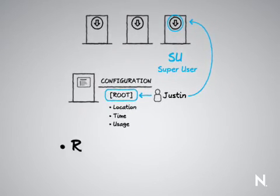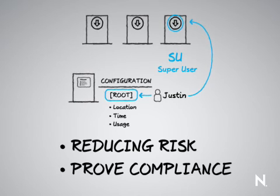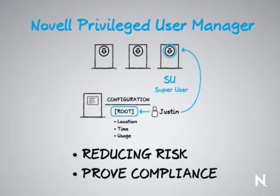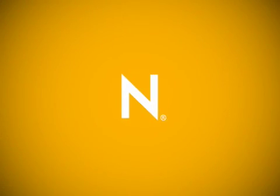Again, this is about reducing risk — that is the key word here. It's about risk and lowering the risk, as well as being able to prove compliance. Because proving compliance isn't a matter of just saying yes, we've locked it down and everything's great — I have to be able to prove it through logs. And so this is one way that you could possibly explain Privileged User Management to your customers. Again, this is Justin Taylor with Novell, thanking you for taking the time to watch this and wishing you happy selling. Thank you.